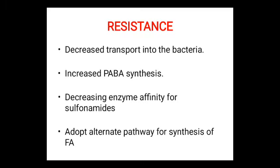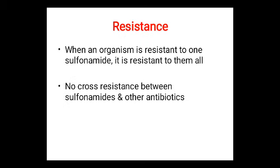Bacteria develop resistance to sulfonamides through different mechanisms: decreased transport into the bacteria, increased synthesis of para-aminobenzoic acid, decreased enzyme affinity for sulfonamides, and adoption of an alternate pathway for folic acid synthesis. When an organism is resistant to one sulfonamide, it is resistant to all. No cross-resistance is seen between sulfonamides and other antibiotics.